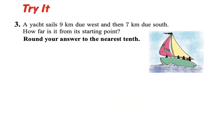Here is your last try question for this video. A yacht is sailing 9 kilometers due west and then 7 kilometers due south. How far away is it from its starting point? Make your starting point any point. This one will be a decimal number, so we're going to round to the nearest tenth.